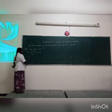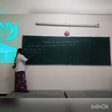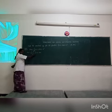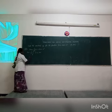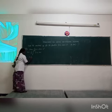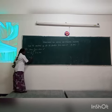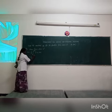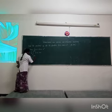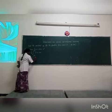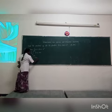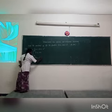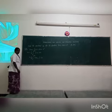Now we substitute 2 pi x minus x square instead of f of x. So, 1 by pi, integral 0 to 2 pi, of 2 pi x minus x square, into dx.